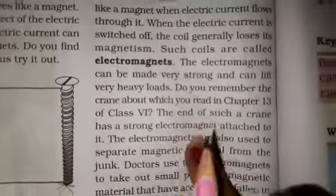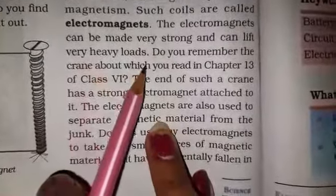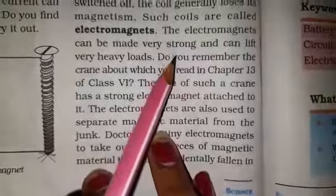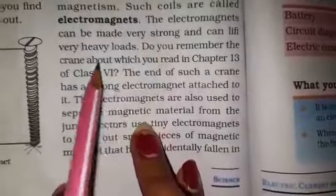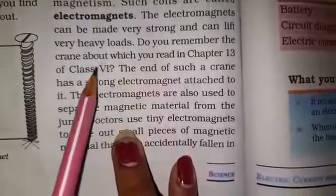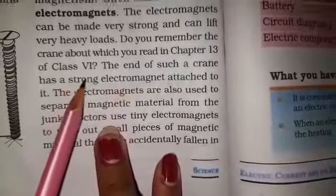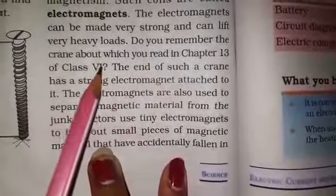The electromagnets can be made very strong and can lift very heavy loads. Electromagnets can be strong and can lift heavy loads. Do you remember the crane about which you read in Chapter 13 of Class 6?